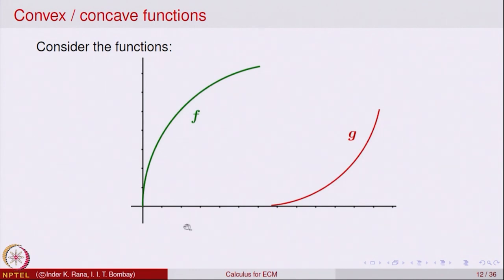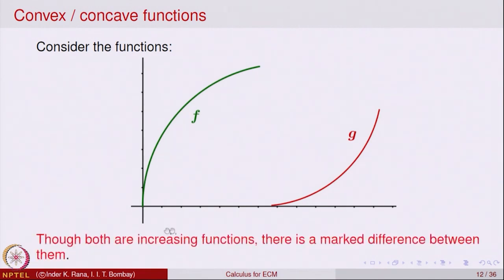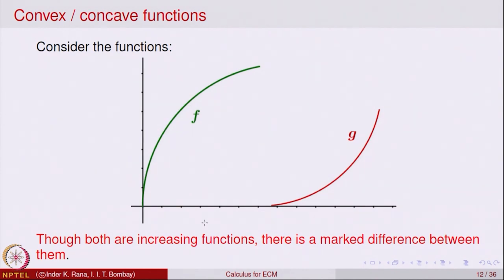Still there is a categorical qualitative difference between the graph of f and the graph of g. If you look at the picture, the graph of f seems to be bending away from the x-axis and the graph of g seems to be bending towards the x-axis. This property — one bending away and one bending towards — we would like to make more precise. Geometrically, the graph of f bends away from the x-axis whereas the graph of g bends towards it.